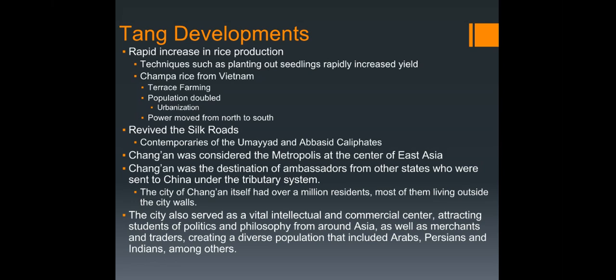Chang'an — which you've heard before as the capital of the Han — was considered a metropolis at the center of east Asia. It was the destination of ambassadors from other states who were sent to China under the tributary system.